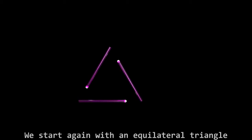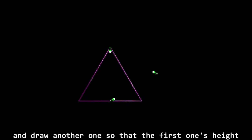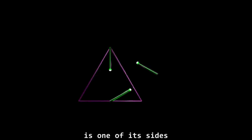Tuan Buicuang's method, also from 2011. We start again with an equilateral triangle and draw another one, so that the first one's height is one of its sides.